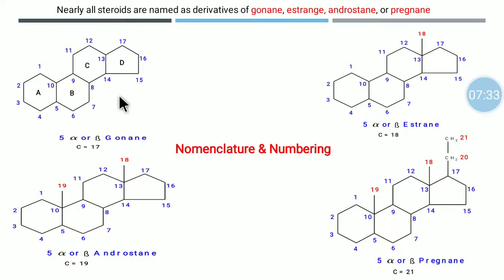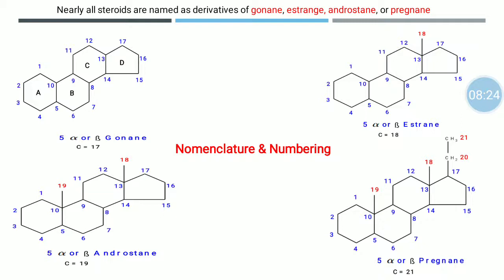So the total number of carbons: gonane has 17 carbons, estrane has 18 carbons, androstane has 19 carbons, and pregnane has 21 carbon atoms. This nomenclature and numbering system is fundamental to the steroid molecule. To give the IUPAC name, we must first understand which chemical skeleton our structure belongs to — gonane (17C), estrane (18C), androstane (19C), or pregnane (21C).